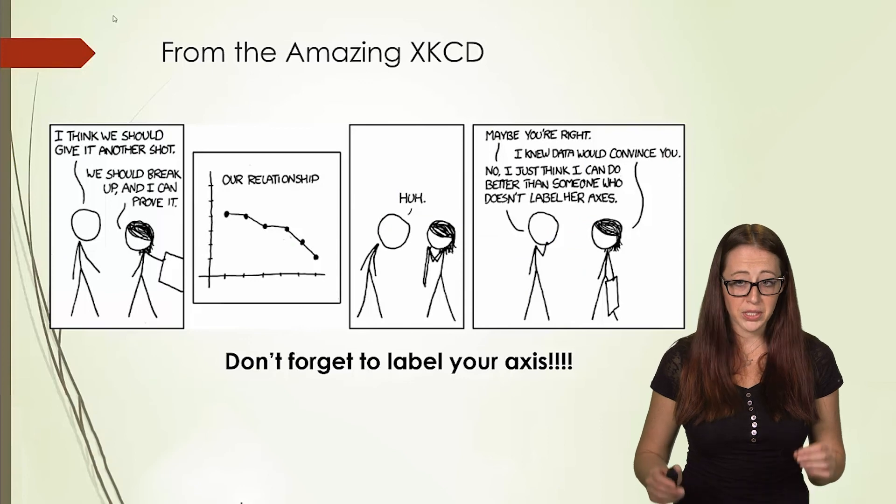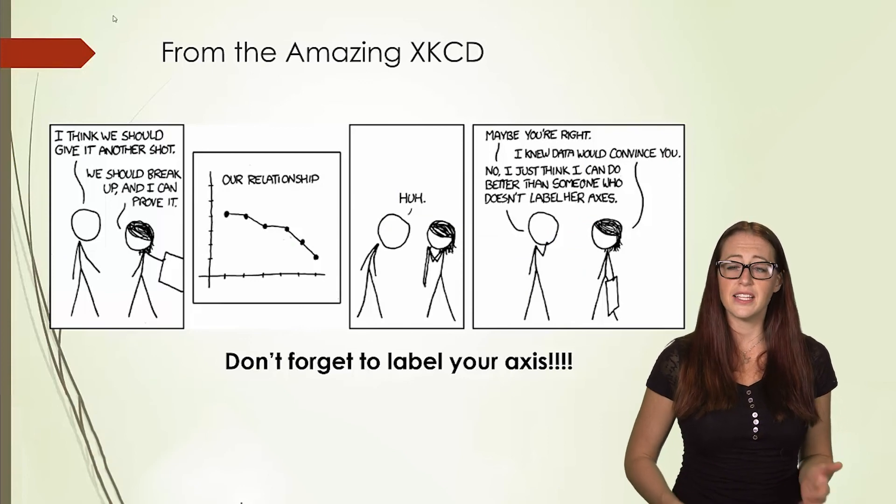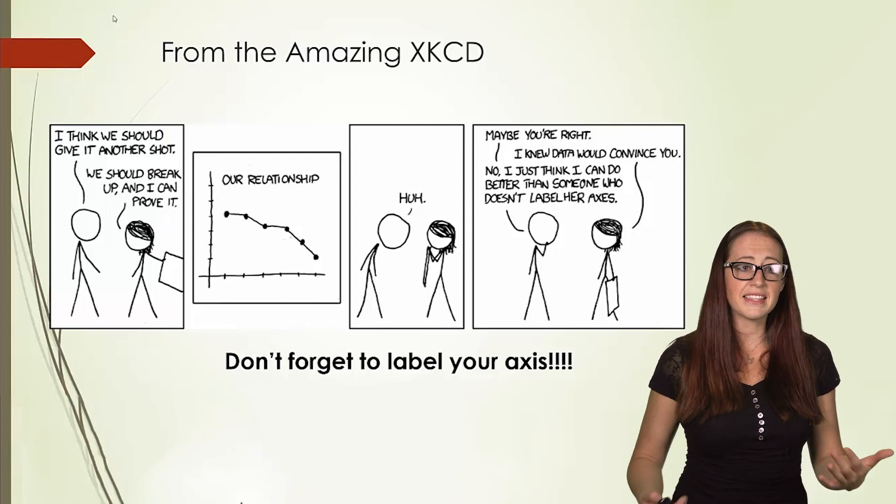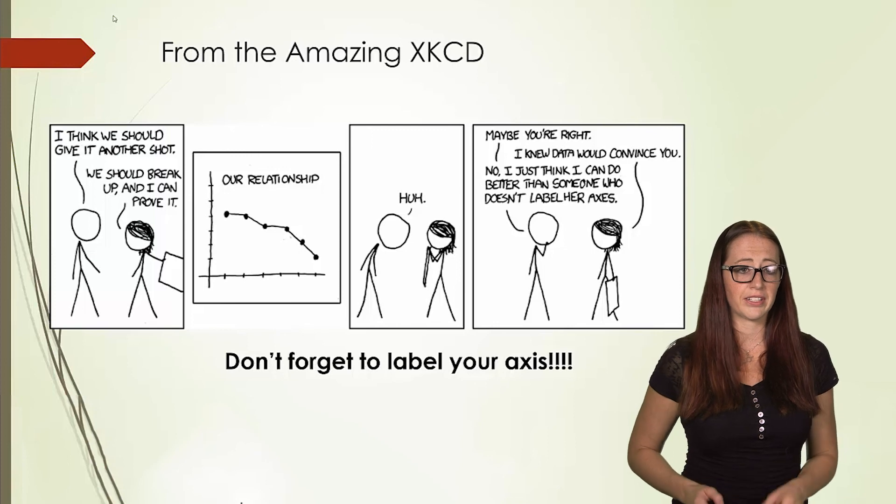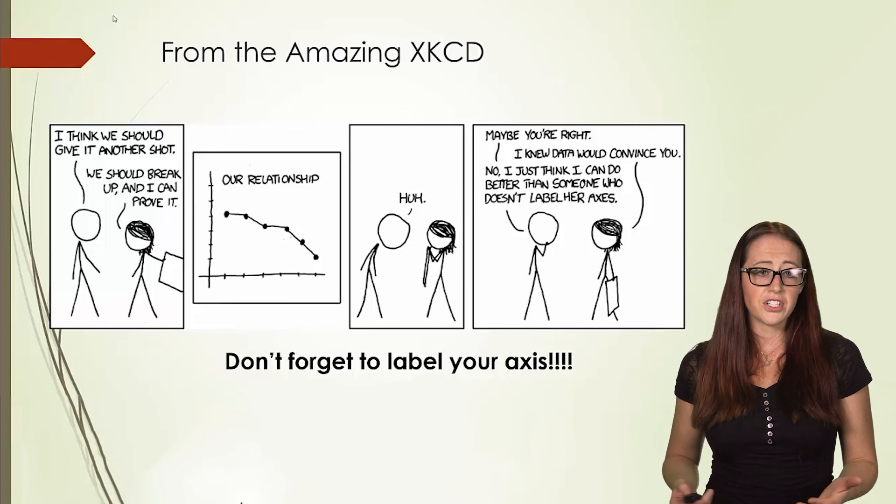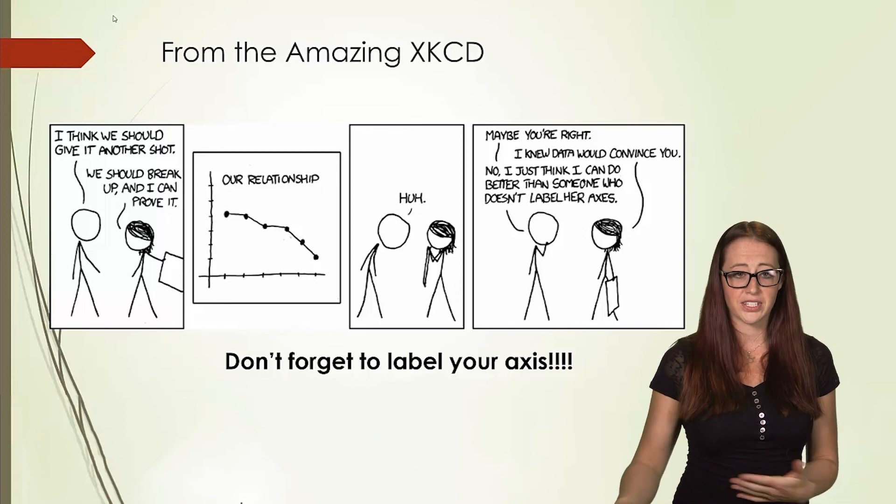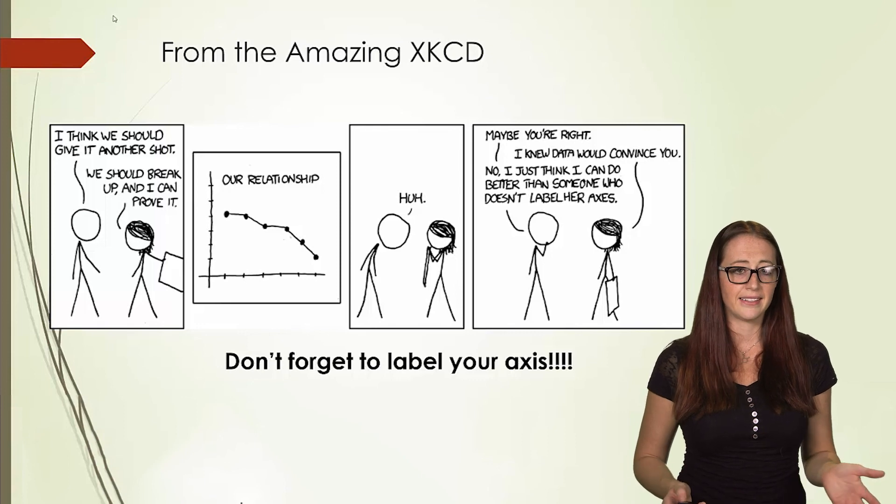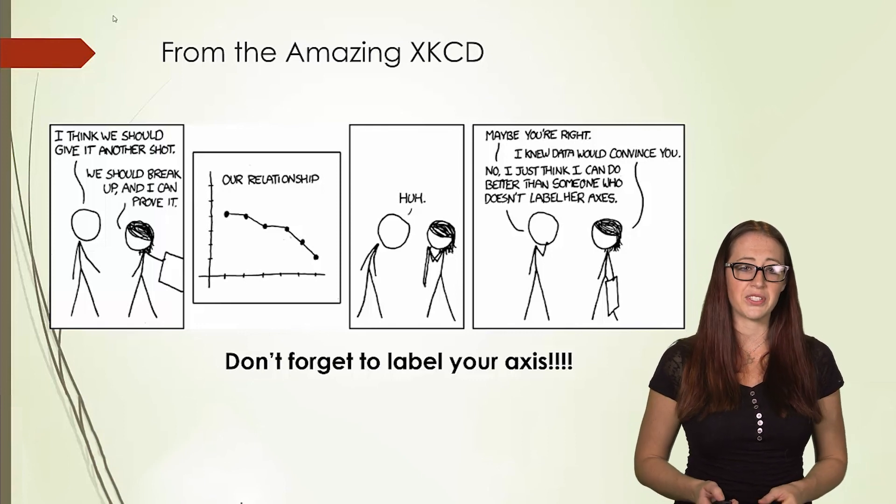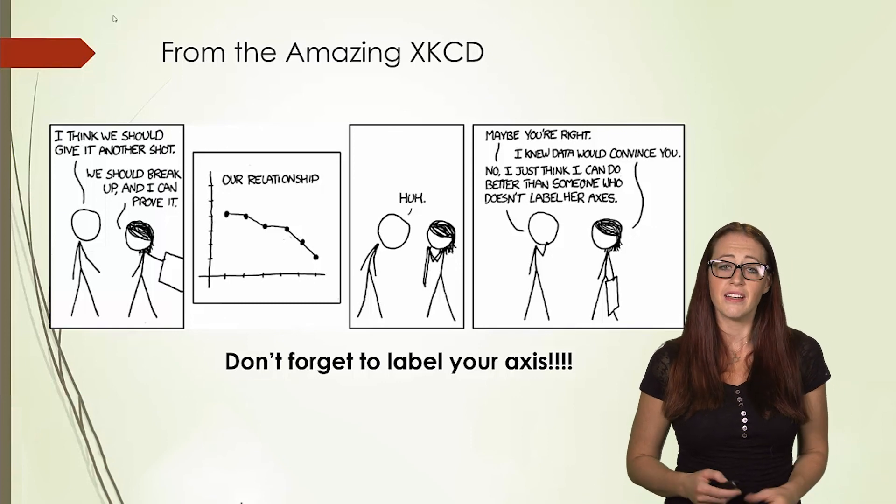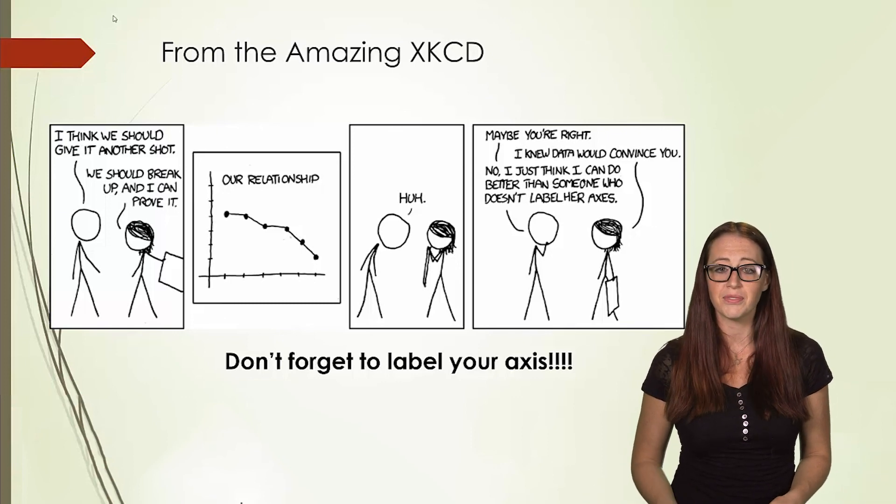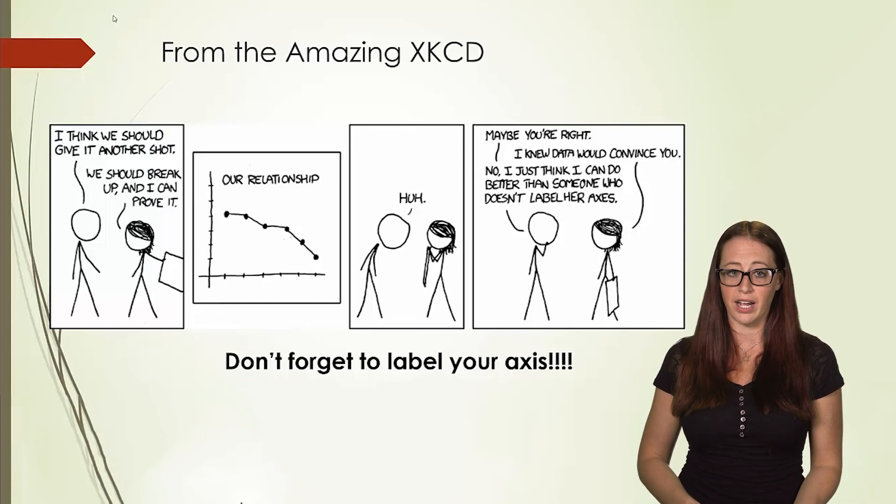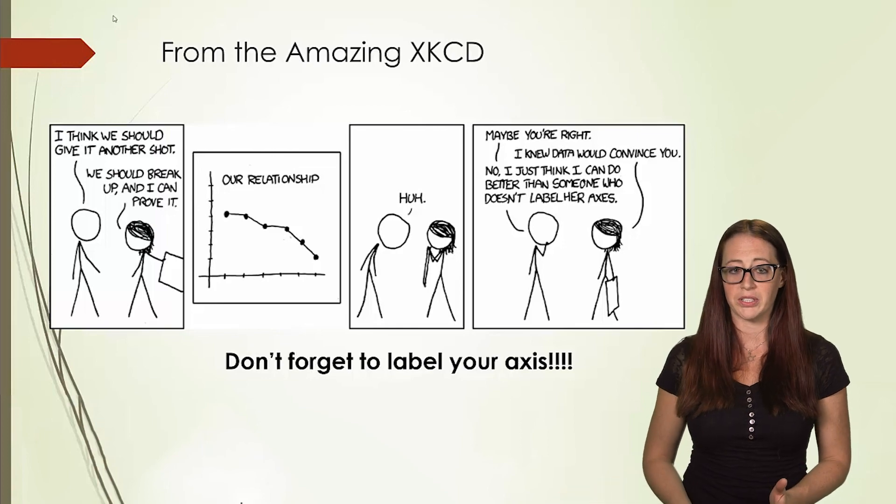Now a quick comic to remind you of a very important topic. The comic shows a couple where she says we should break up and shows a graph of their relationship going downhill. He says maybe you're right, but then says no, I just think that I could do better than someone who doesn't label her axes. It's a silly comic, but hopefully this will help you remember, always label your axes when you're doing these graphs. Otherwise, we don't know what you're graphing, and it's not correct.